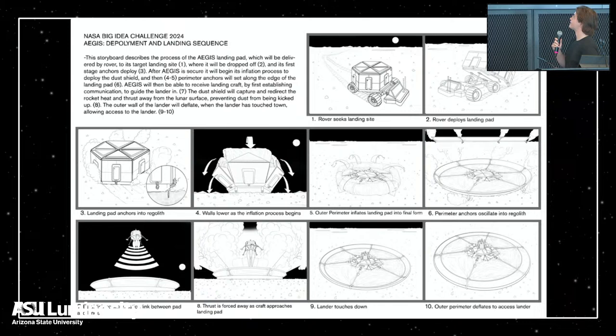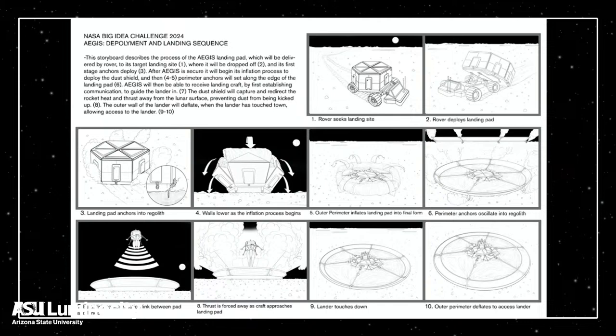You can see our storyboard developed with our industrial designers. Aegis will be stored in a contained state and deployed by a rover. Once at the landing location, it buries anchors into the ground, then deploys its inflatable tarp — an inflated skeleton — which expands out to its final diameter and does final anchoring. Through communication systems with the lander itself, it helps navigate the lander to its location. As the lander comes down, exhaust gases get deflected up away from the regolith, ensuring almost no regolith disruption at all.